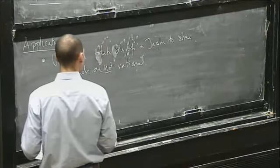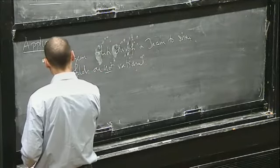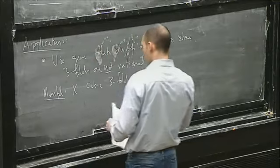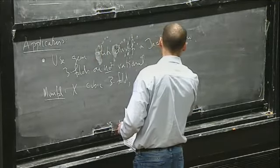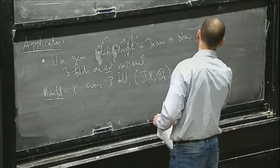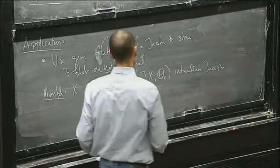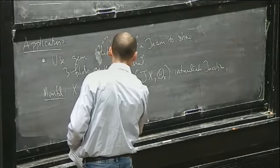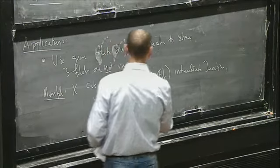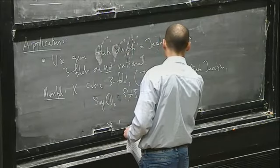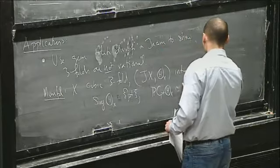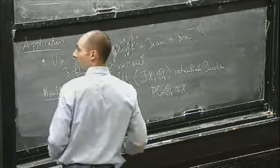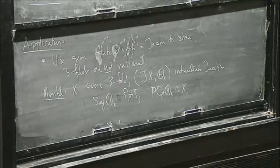In particular, let me remind everyone of Mumford's theorem. If X is a cubic threefold and I look at the intermediate Jacobian, you can say a lot about this theta divisor. It turns out that the singular locus of the theta divisor is just a single point. Moreover, if you look at the projectivization of the tangent cone at this point to the theta divisor, this is isomorphic to the cubic threefold you started with. So this gives you, for instance, the Torelli theorem for cubic threefolds.